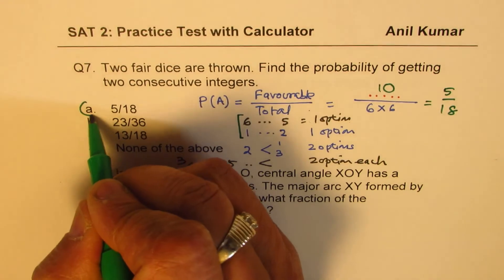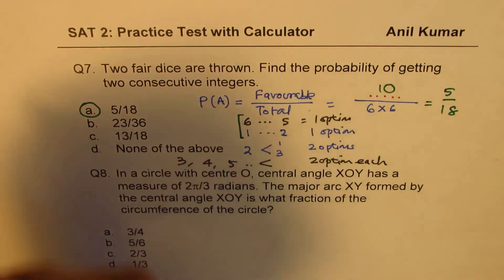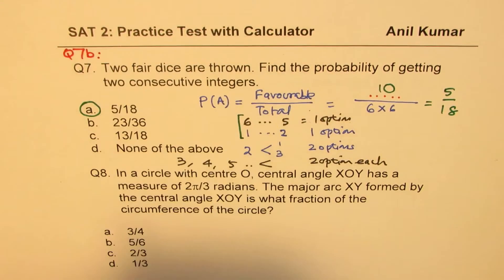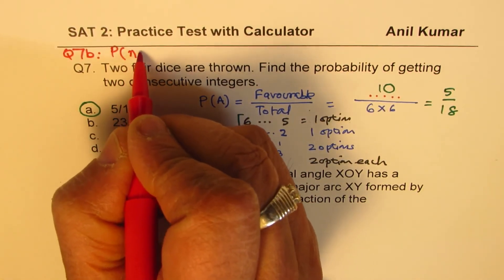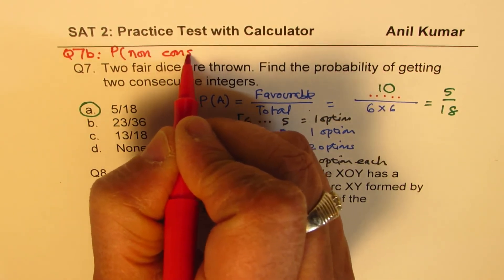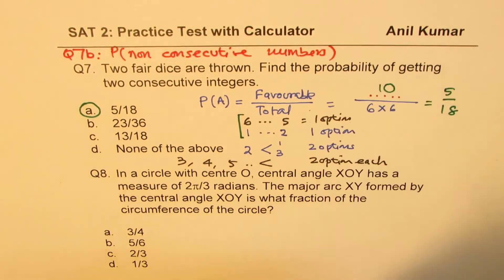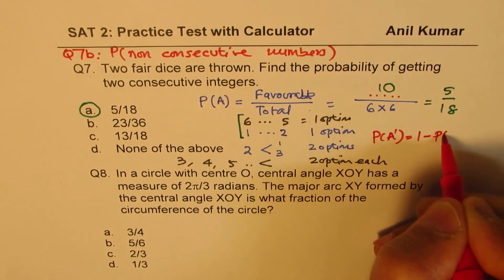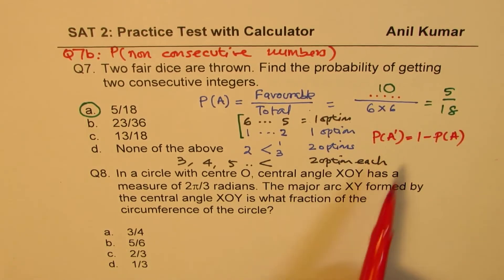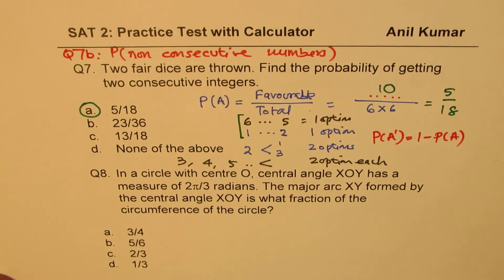A variation to question 7b could ask for the probability of non-consecutive numbers. In that case, use the complement rule: P(non-consecutive) equals 1 minus P(consecutive), giving 1 minus 5/18. That would be the answer for non-consecutive outcomes.